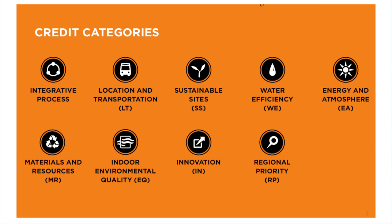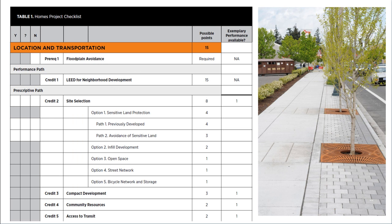These are the LEED credit categories. On my previous video, we discussed the first credit of Location and Transportation, which is LEED for Neighborhood Development. Now we will proceed to the second credit, which is Site Selection. Site Selection is the first credit in the prescriptive path. You can have 8 points for this credit. It has 5 options, and in Option 1 it has Path 1 and Path 2.